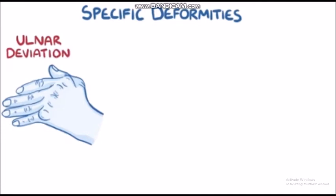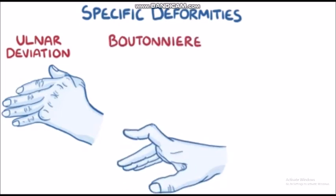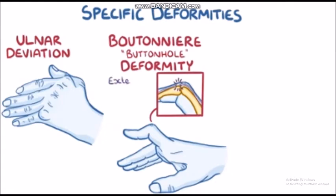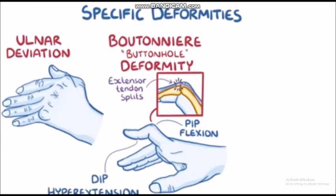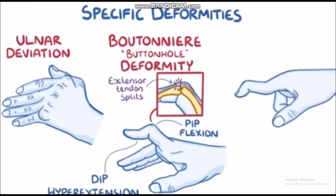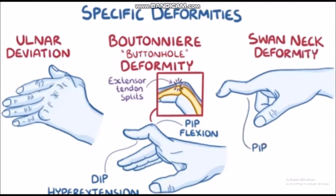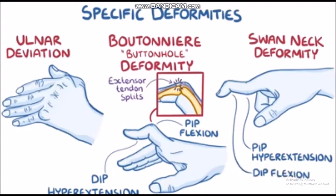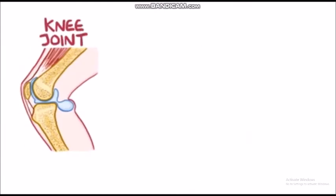Deformities are also common in the interphalangeal joints, such as the boutonniere or buttonhole deformity. This occurs when the extensor tendon in the back of the finger splits and the head of the proximal phalanx pokes through like a button through a buttonhole, causing flexion of the proximal interphalangeal joint and hyperextension of the distal interphalangeal joint. Another finger deformity is the swan neck deformity, which is the opposite: hyperextension of the proximal interphalangeal joint and flexion of the distal interphalangeal joint. In the knee joint, a one-way valve can form, with fluid from the swollen knee filling the semimembranosus bursa, causing the synovial sac to bulge posteriorly into the popliteal fossa, creating a synovial fluid-filled cyst called a Baker's or popliteal cyst.